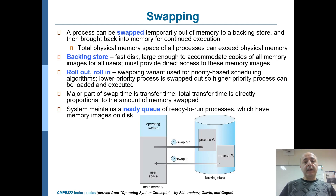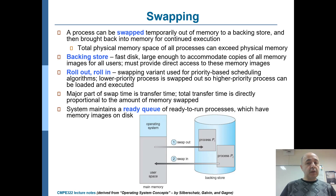Our aim is to have as many processes as possible in memory, since we want to increase the degree of multiprogramming. If you have multiple processes available in memory at any point in time, the scheduler will always find a process to execute next. Some of these processes will be in ready state, and some will be in waiting states, waiting for I/O or for synchronization, as discussed in the previous chapter.